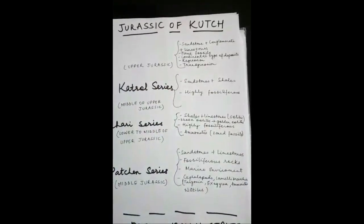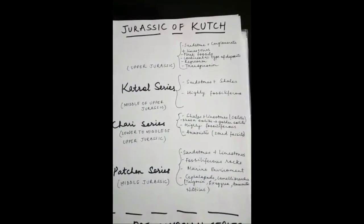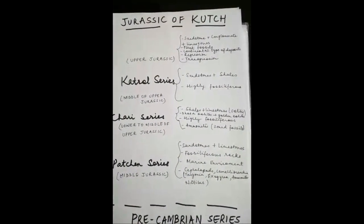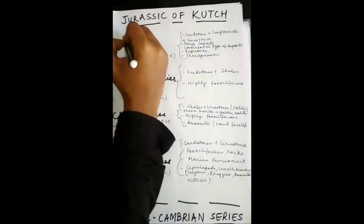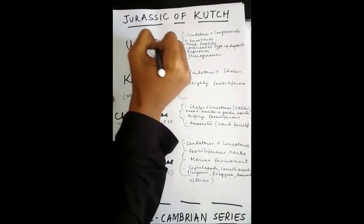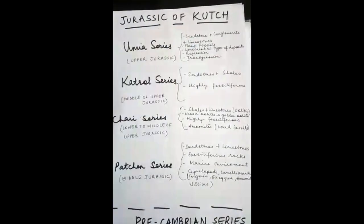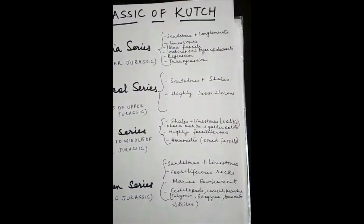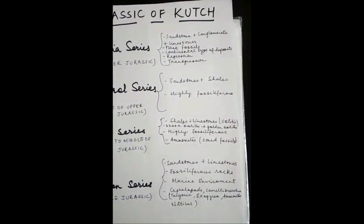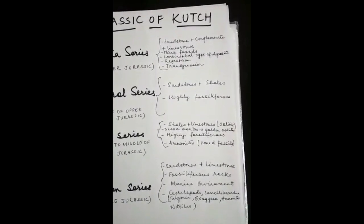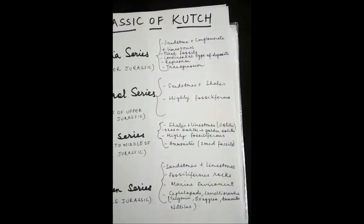Then is the Katrol series, which was formed in the middle of upper Jurassic. They are mainly sandstones and shales, and are highly fossiliferous. Last is the Umia series, which was formed in the upper Jurassic and consists of sandstones, conglomerates, and limestones. They mainly contain plant fossils.